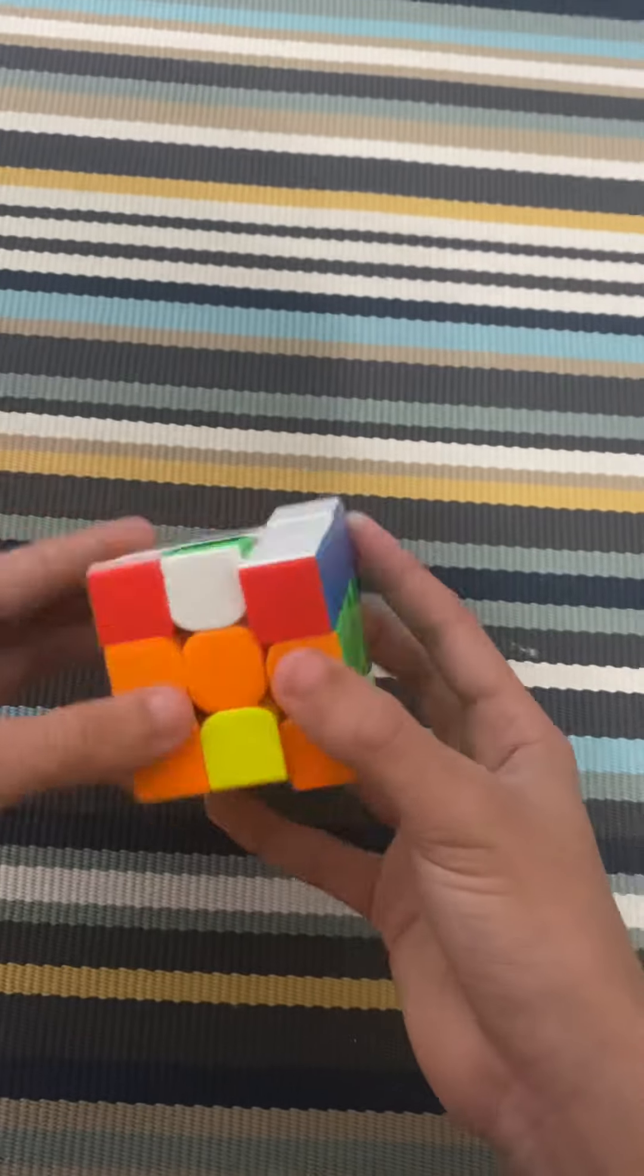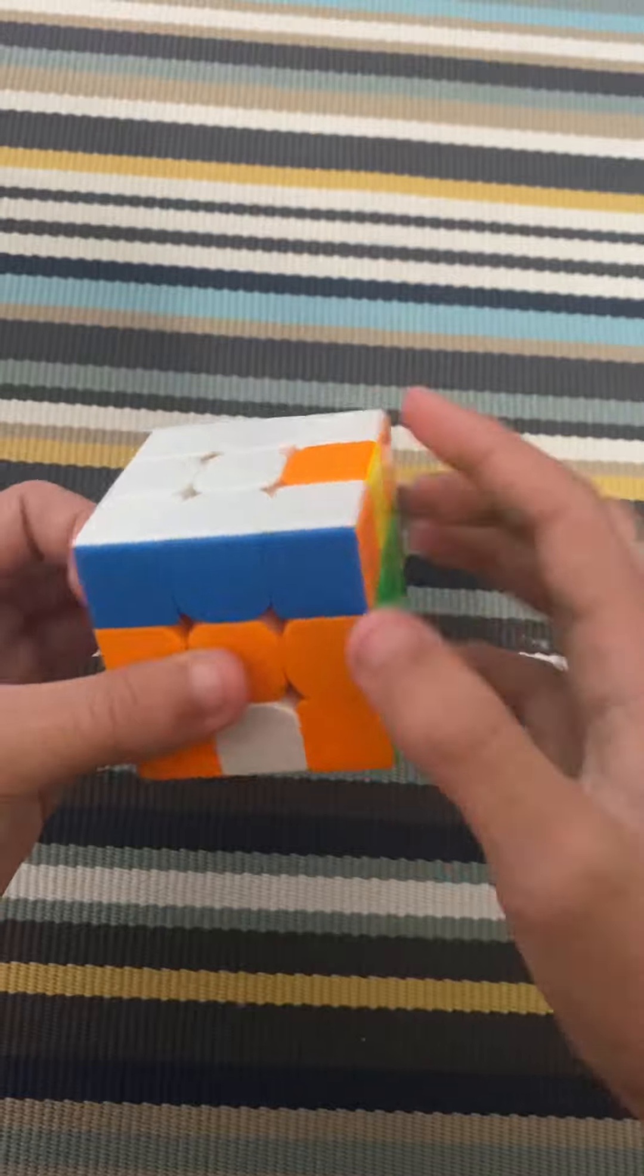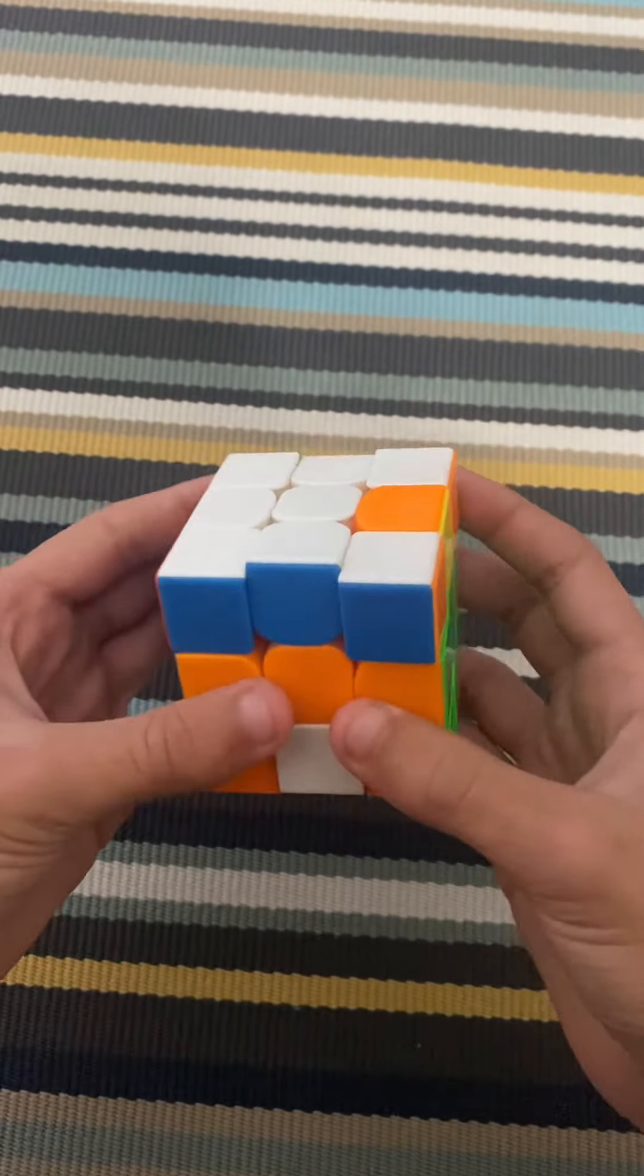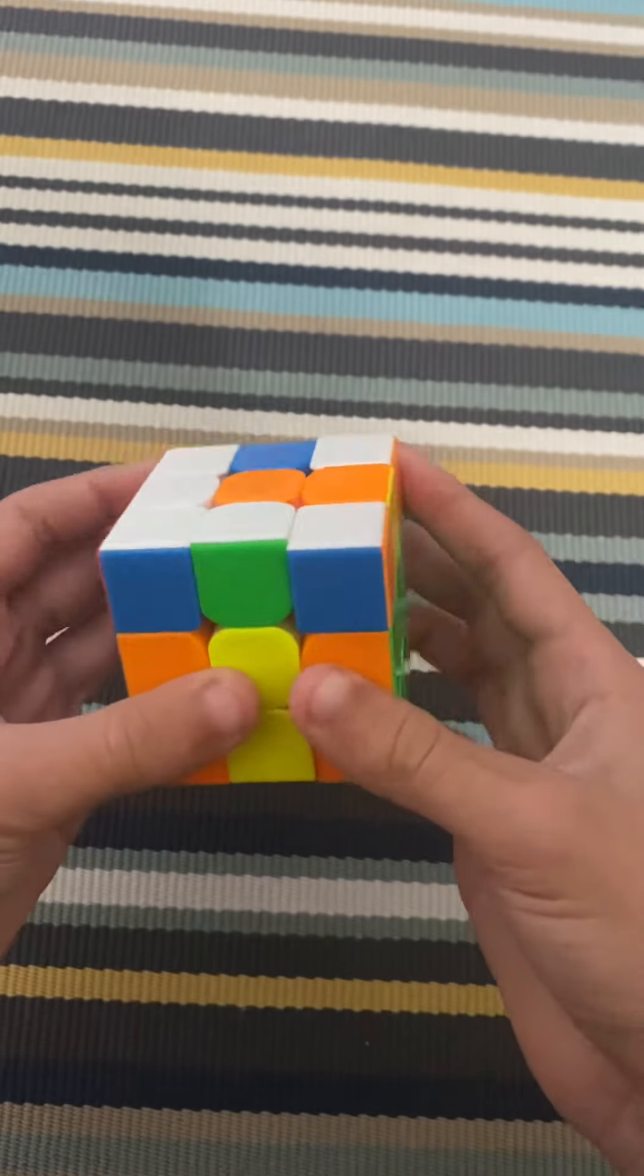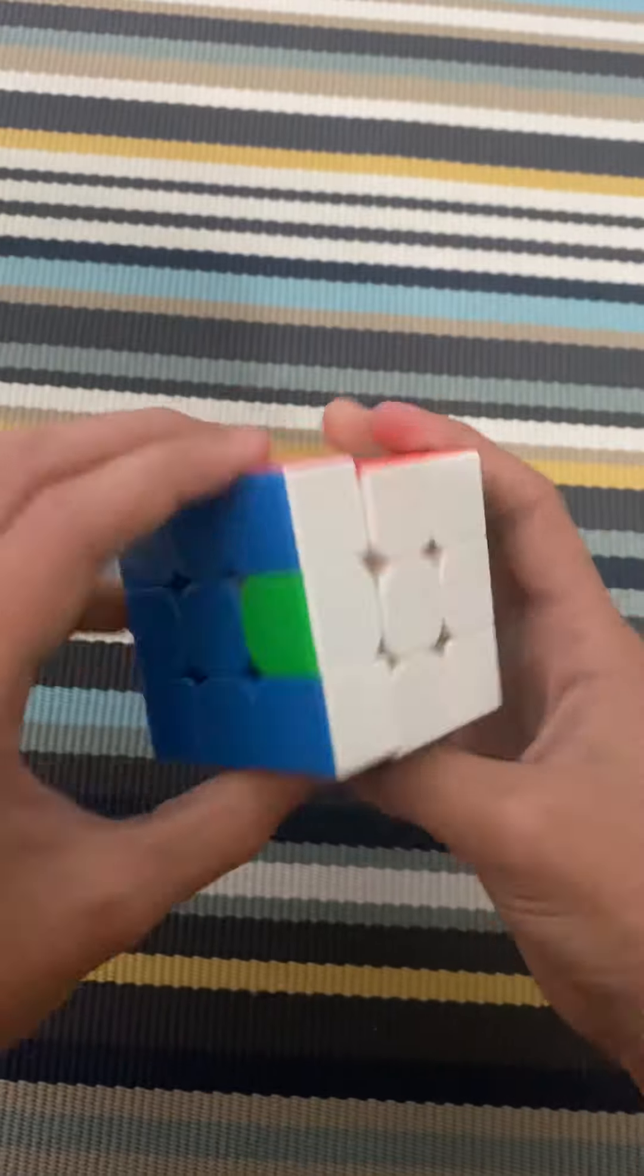But instead of doing that, we can't do that because it would be flipped. So we have to do this algorithm first, make sure it's over here, and then do this algorithm. Oh wait, what was the algorithm? Oh yeah, do this. And then you do it.